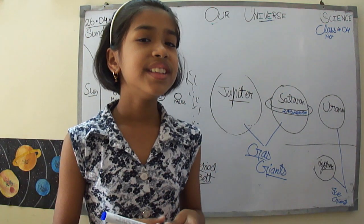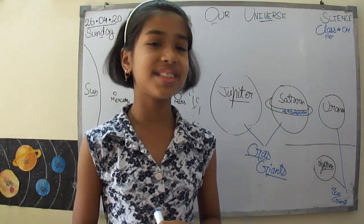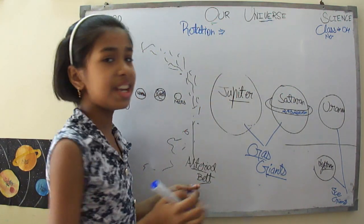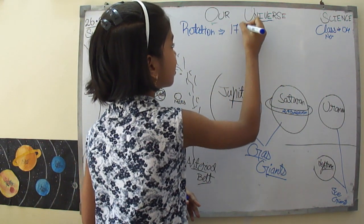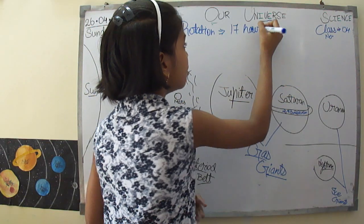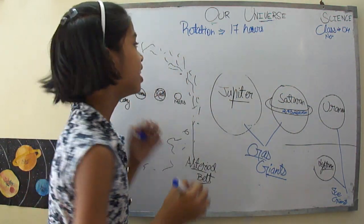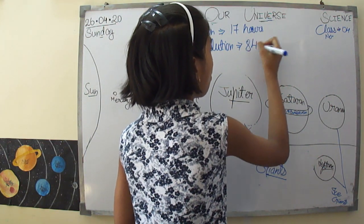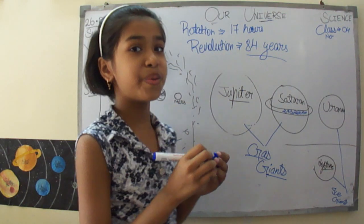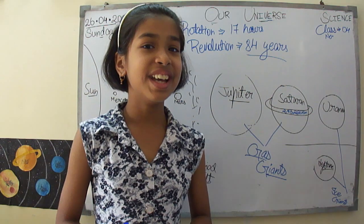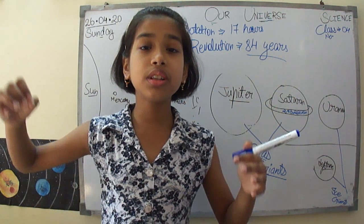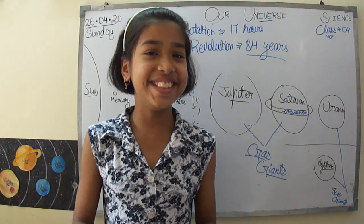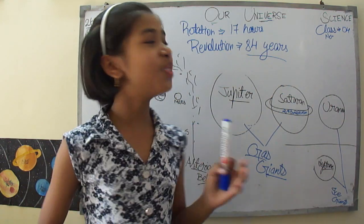What is the rotation and revolution period of Uranus? The rotation period of Uranus is 17 hours, which is about 70% of Earth's day. Its revolution period is 84 years. You can imagine that if you lived on this planet, you would only turn 1 year old after 84 Earth years!